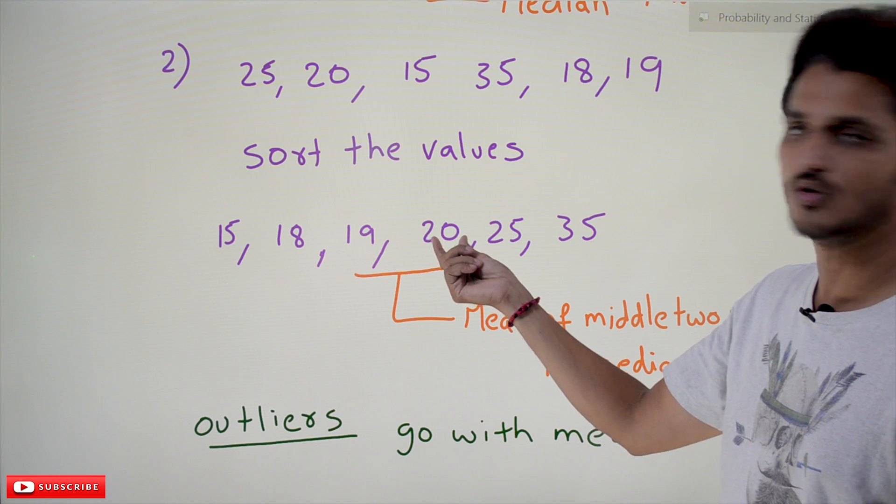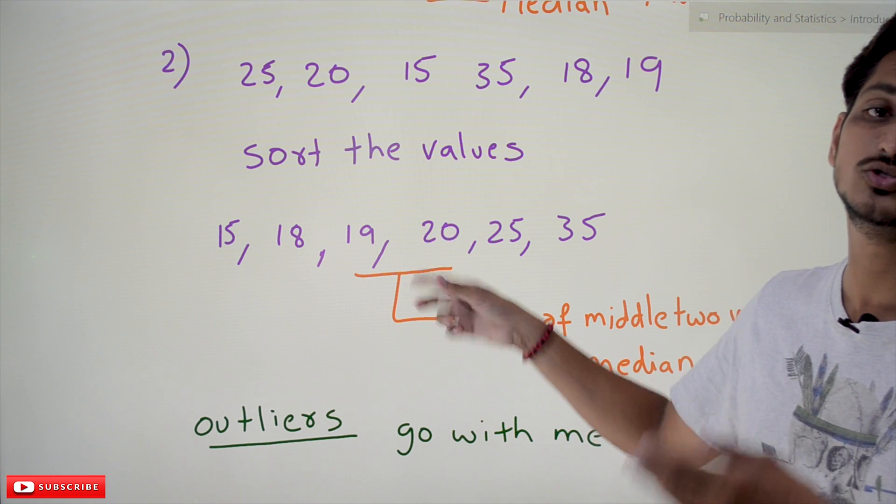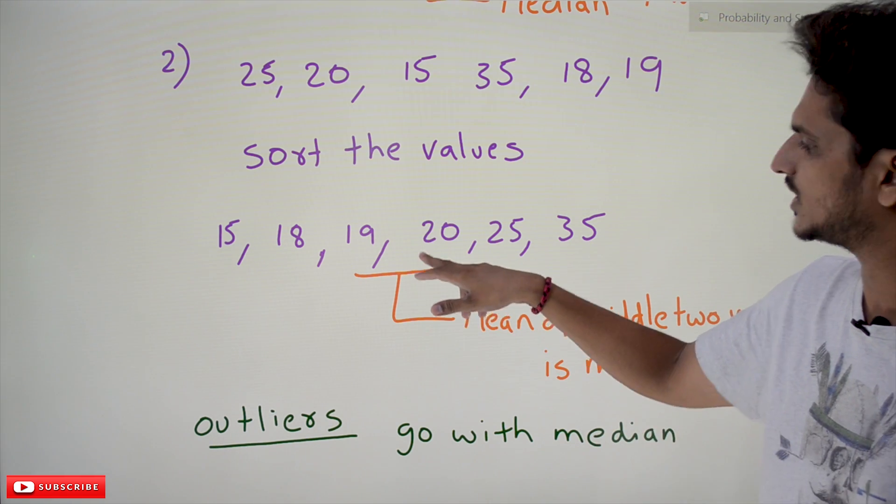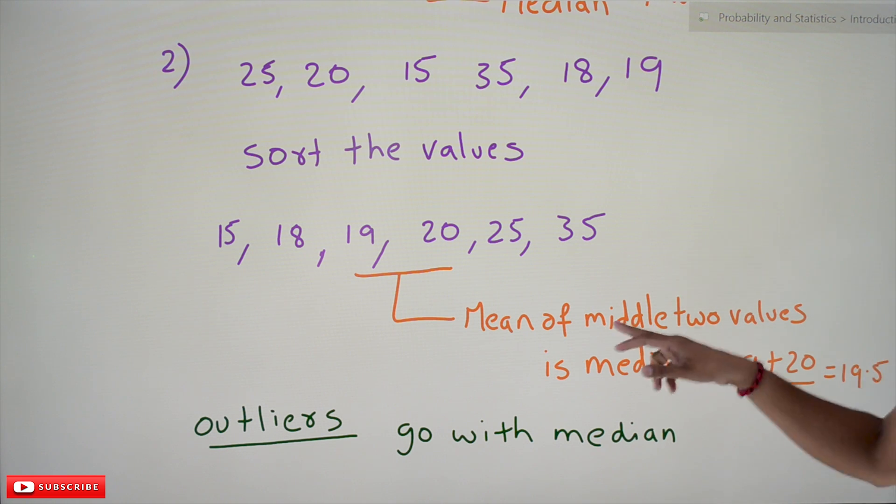The middle two values are 19 and 20. Take the mean of these two middle values. Mean of middle two values is the median: 19 plus 20 divided by 2, which equals 19.5. This is how we calculate the median value.